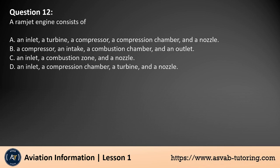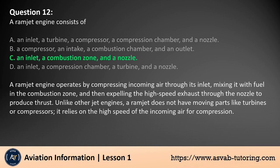Question 12. A Ramjet engine consists of: A. An inlet, a turbine, a compressor, a compression chamber, and a nozzle. The answer is C. A Ramjet engine operates by compressing incoming air through its inlet, mixing it with fuel in the combustion zone, and then expelling the high-speed exhaust through the nozzle to produce thrust. Unlike other jet engines, a Ramjet does not have moving parts like turbines or compressors; it relies on the high speed of the incoming air for compression.